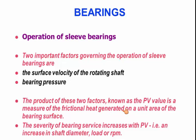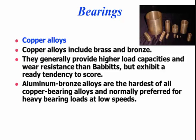The PV value is the measure of the frictional heat generated on a unit area of the bearing surface, and the severity of the bearing surface increases with that number. So if the shaft diameter gets bigger, the load gets bigger, or the RPM goes up, that PV value goes up, and the potential for friction increases correspondingly.